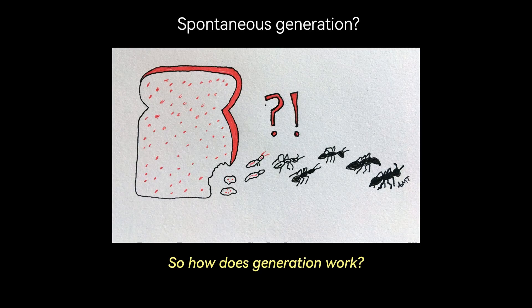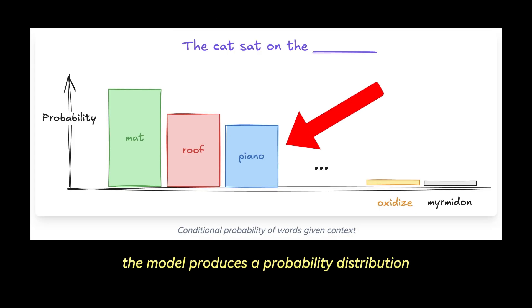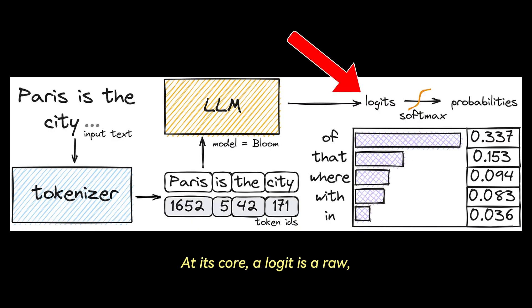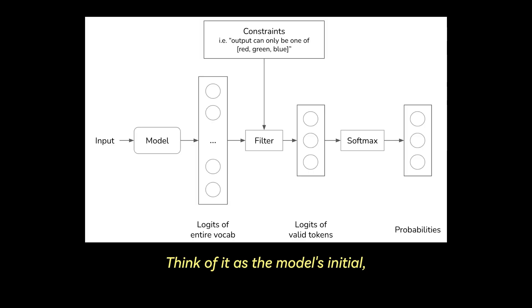So how does generation work? When you prompt an LLM, the model produces a probability distribution over the vocabulary for the next token. This is done by computing a score called a logit for each token based on the current context representation. At its core, a logit is a raw, un-normalized score produced by a language model for each possible next word or token in a sequence. Think of it as the model's initial, uncalibrated gut feeling or confidence score for every word in its vocabulary, based on the input it has processed.